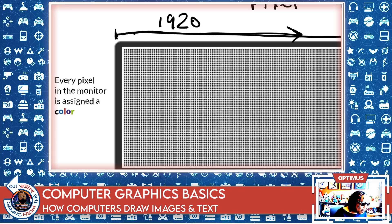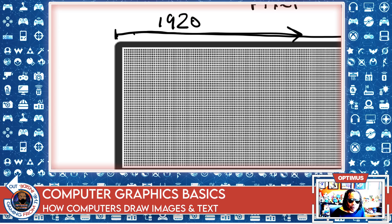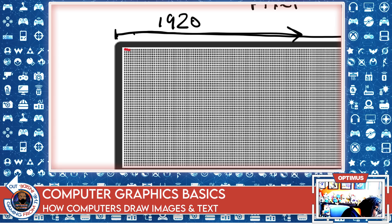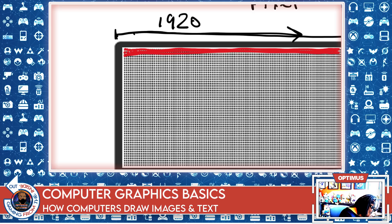Each one of these pixels is assigned a color. The color that the pixel takes on depends on the image the computer is trying to draw. For example, let's assume it wants to draw a screen full of red. The computer will start at the top-left dot, fill it in with red, go to the next dot, fill it in with red, and so forth — all the way down the first row of pixels. Then it goes to the next row and does the same thing, filling in dot by dot, all the way down until the whole screen is filled with red.